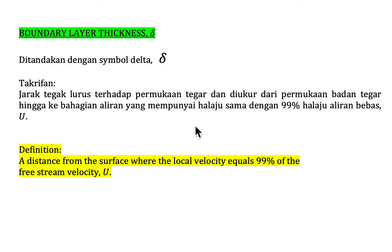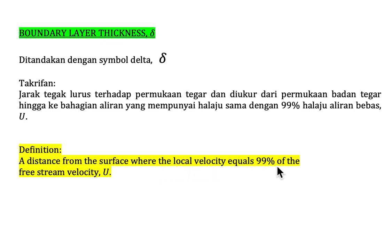Now I would like to share with you three basic terms that you need to understand and write their equations in order to solve boundary layer problems. The first term is boundary layer thickness, written with the symbol delta. The definition of boundary layer thickness is the distance from the surface where the local velocity equals 99% of the freestream velocity U.